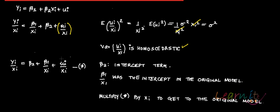So the new model is yi over xi equals beta 2 plus beta 1 over xi plus ui over xi. In this new model, beta 2 — which was the slope parameter in the original model — becomes the intercept, and beta 1 becomes the slope parameter.